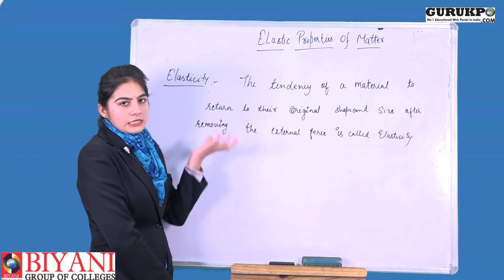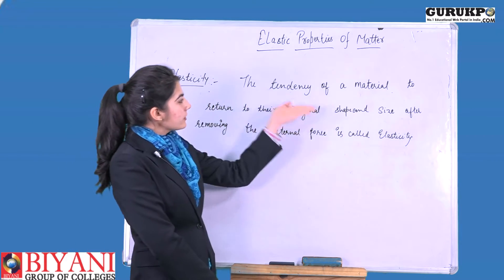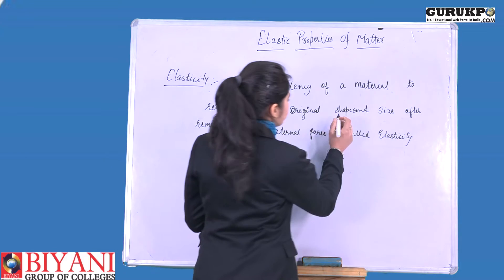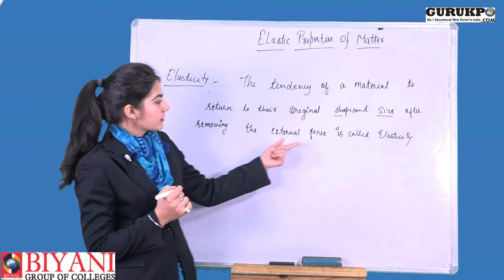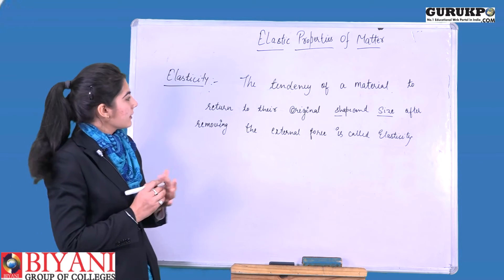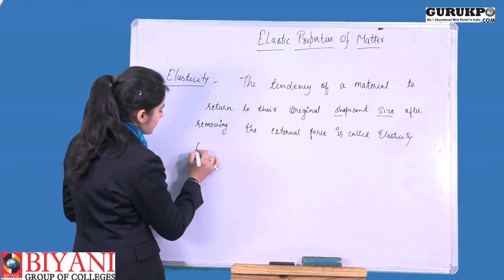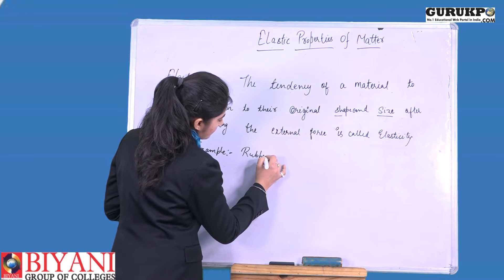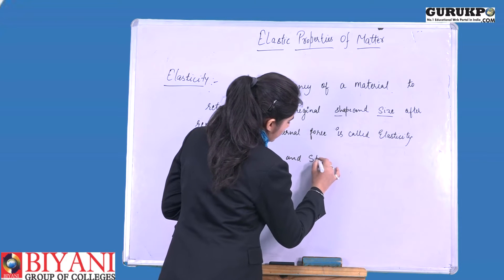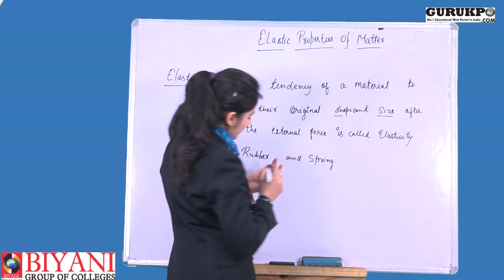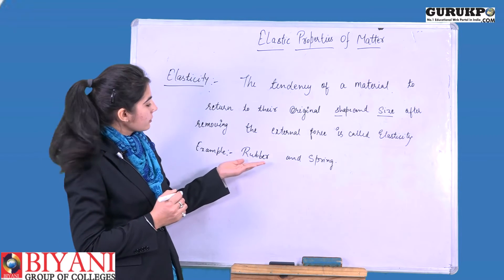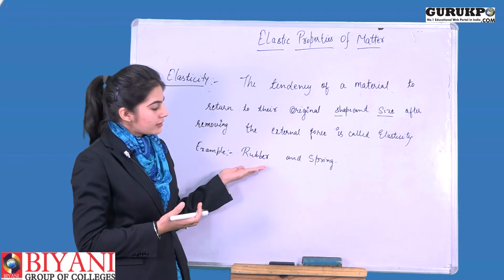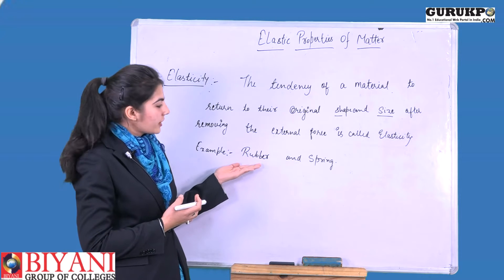First we should know what is Elasticity. Elasticity is the tendency of material to return to their original shape and size after removing the external force. We have examples like rubber and spring. When we apply a force on rubber, it will change its shape, but after the removal of that force, it will regain its original shape. So it has a property of elasticity.